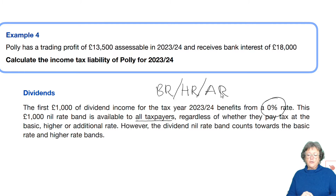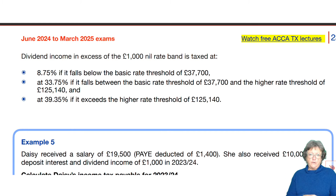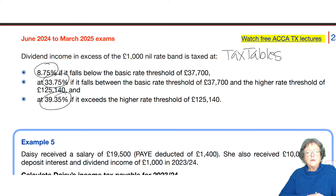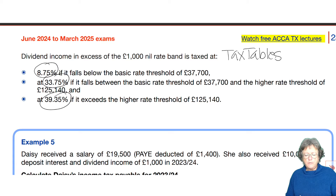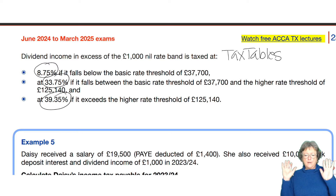The dividend nil rate band does count towards the basic and the high rate bands. The rate at which dividend income is taxed is different — these are unusual numbers, and please check your tax tables to make sure you are using the correct rate. After that £1,000 nil rate band: basic rate taxpayers pay 8.75%, high rate taxpayers pay 33.75%, and additional rate taxpayers pay 39.35%.